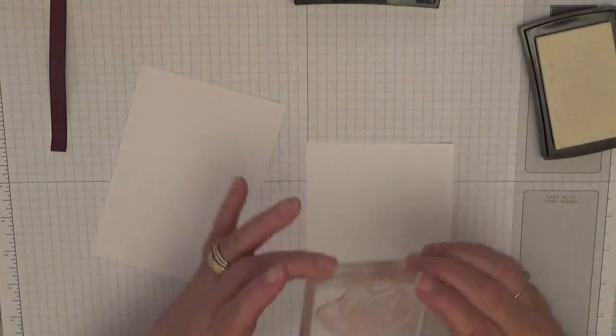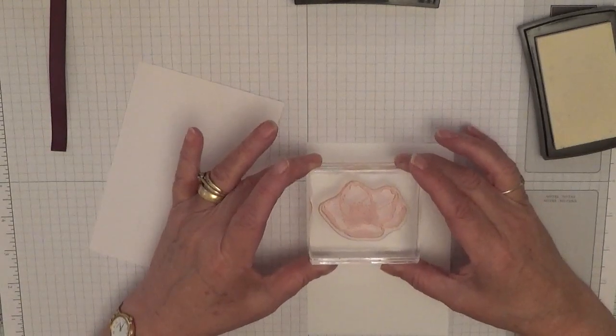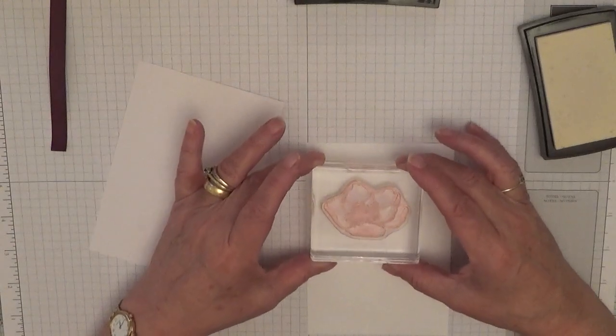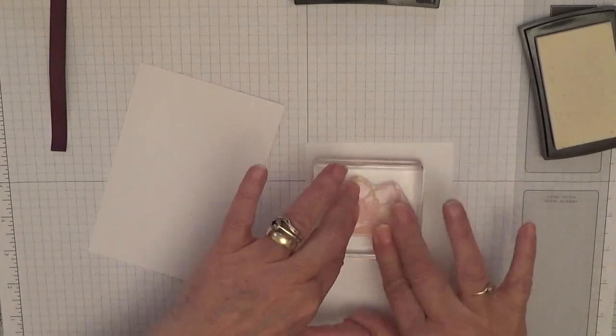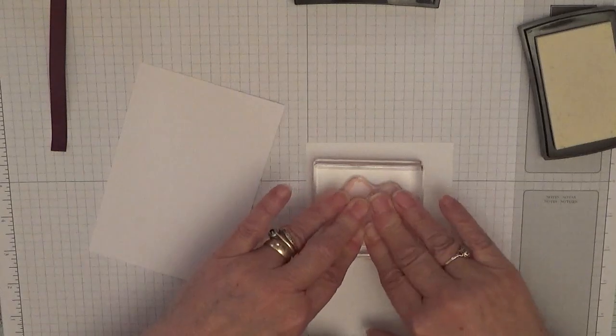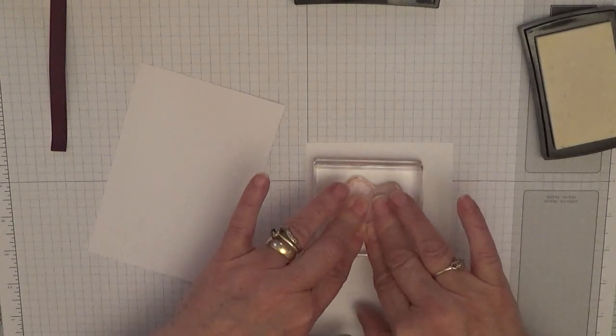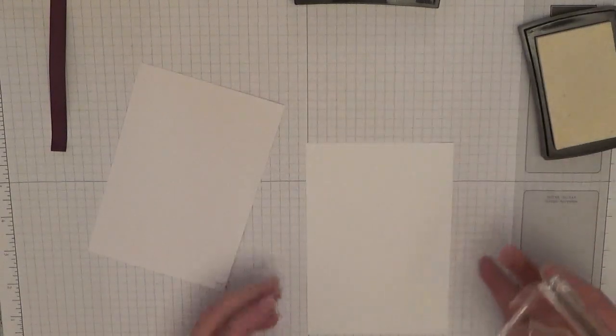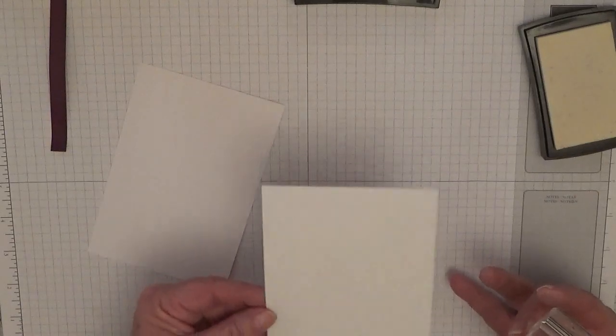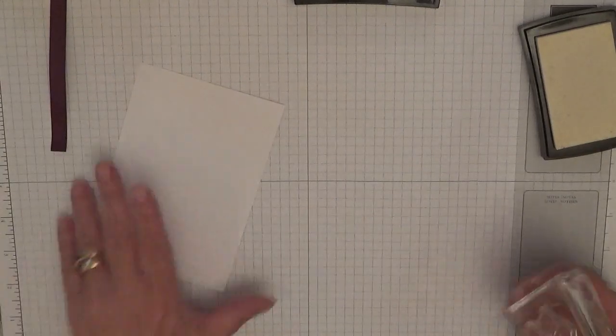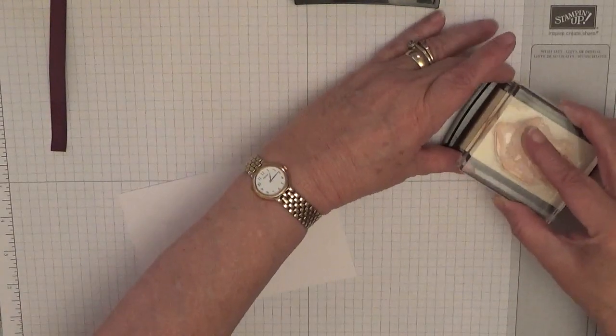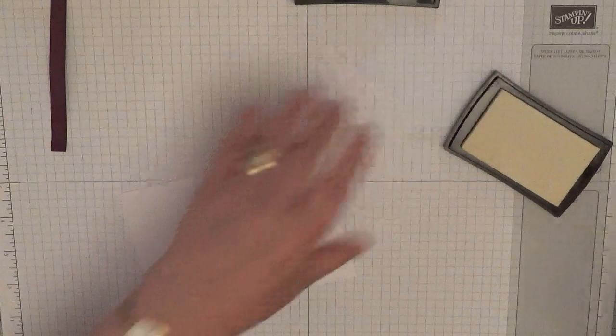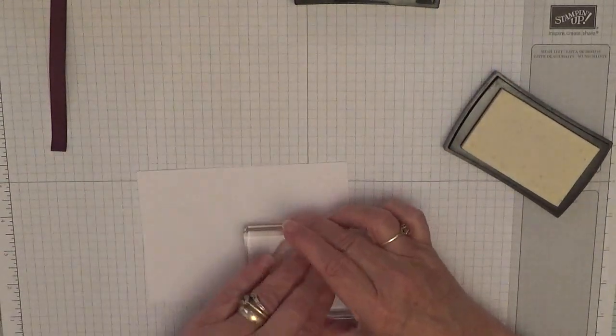I've got our stamp. So ink up your stamp really well with the Versamark, and place this in the top half of your card and just stamp it down.